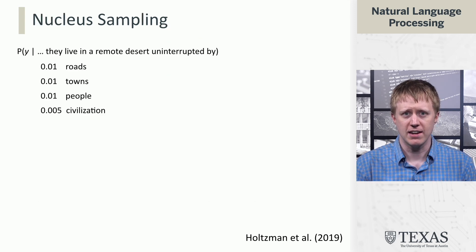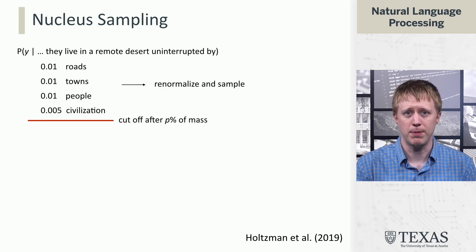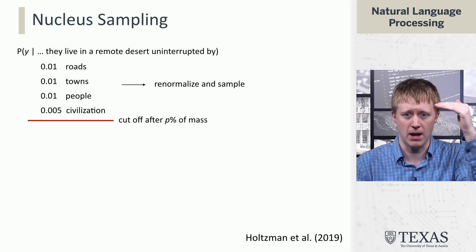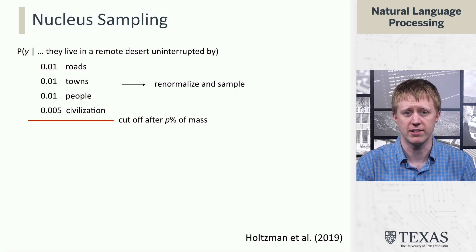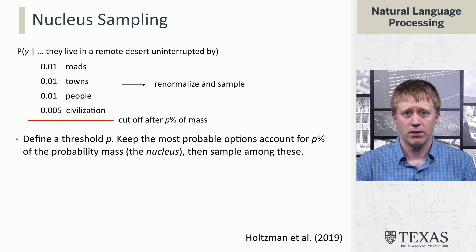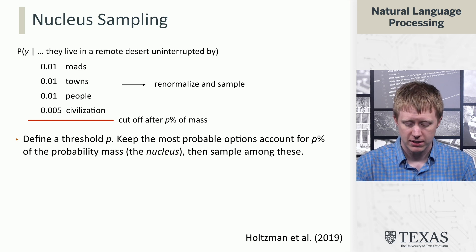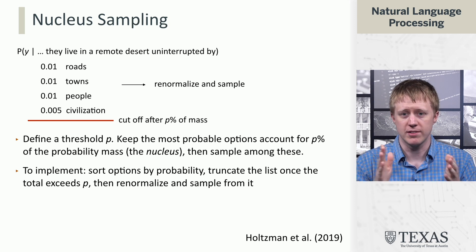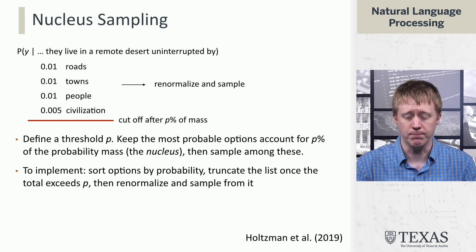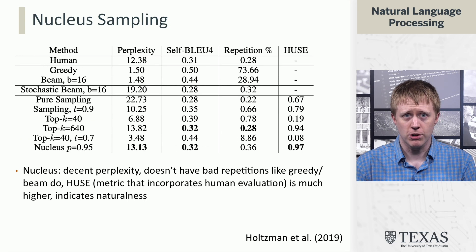Nucleus sampling is the idea to correct for this. It basically involves chopping the distribution — truncating it after p% of the probability mass. You sort the tokens from high probability to low probability, then renormalize and sample from the distribution that's left. It's a relatively simple technique to implement: sort your options, truncate them, and it turns out it works pretty well.